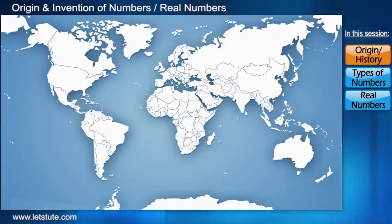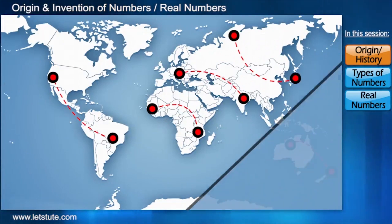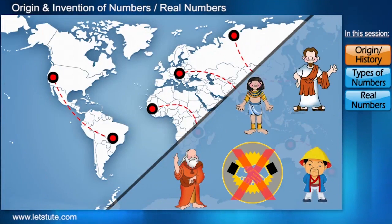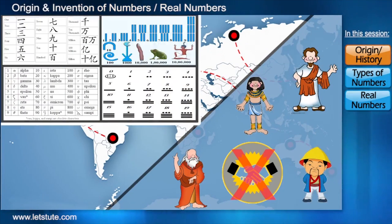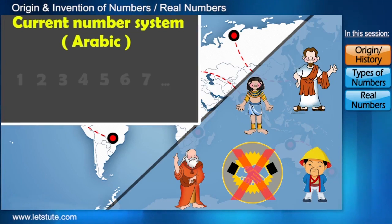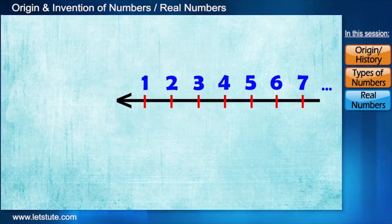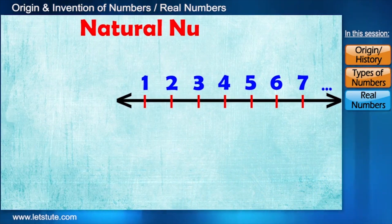And it is also said that, later when they started travelling from one place to another for business, they could not deal properly because their number systems were different from each other. So finally, they must have decided to stick to the current number system that we are using, which is easy to understand and universally accepted by everyone. Today we represent these numbers on a line, which are called natural numbers.